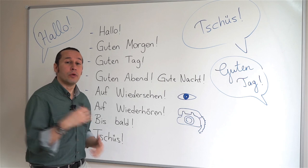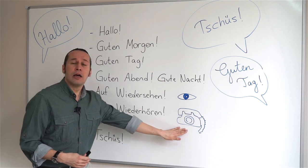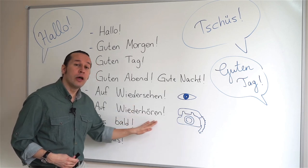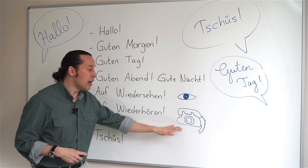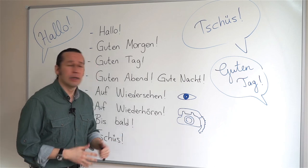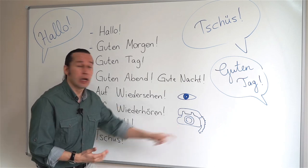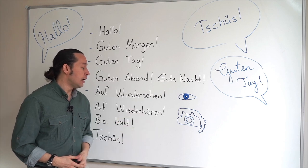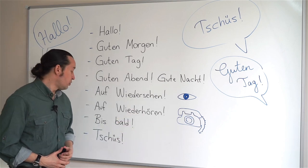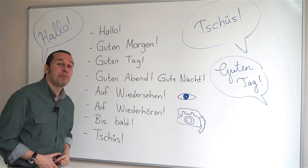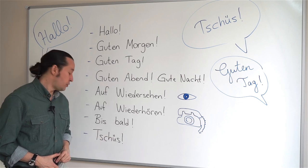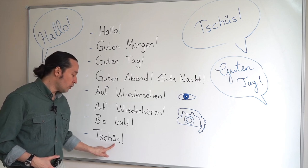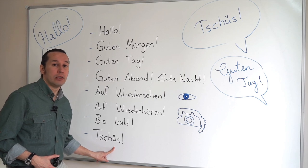But if we have contact with the person — as we are calling that person — we'll say Auf Wiederhören. Hören stands for listening, for hearing, and that's why if we are calling that person and don't have eye contact, you'll say Auf Wiederhören. See you soon in German is Bis bald. Bis bald. And bye bye stands for Tschüss — or you can say Tschüss as well. That stands for goodbye.